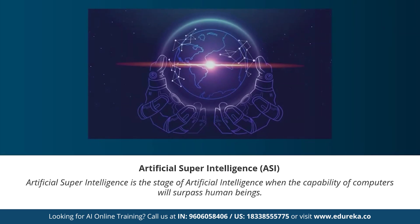Moving on to our last stage: artificial super intelligence. This is the stage of AI when the capability of computers will surpass human beings. It is currently seen as a hypothetical situation, as depicted in movies and science fiction books — where machines are taking over the world. Such systems don't currently exist; we don't have any machine capable of reasoning better than a human being. Artificial super intelligence refers to any system significantly smarter than humans.